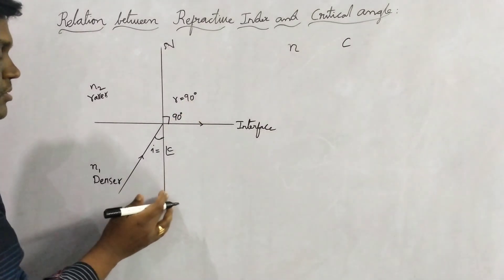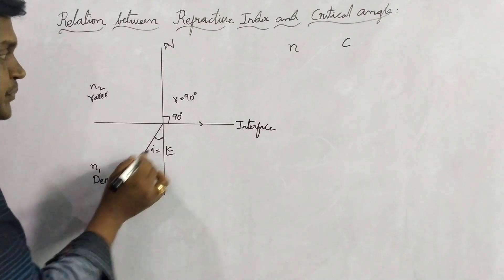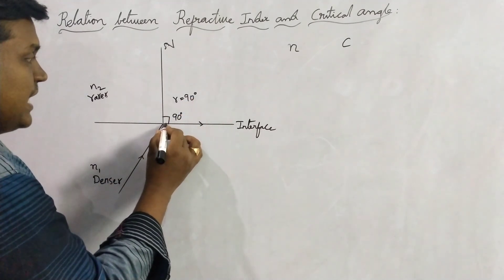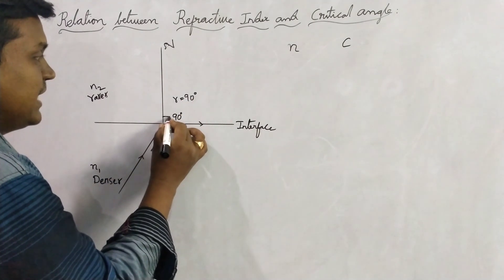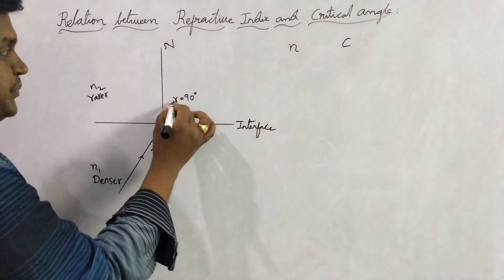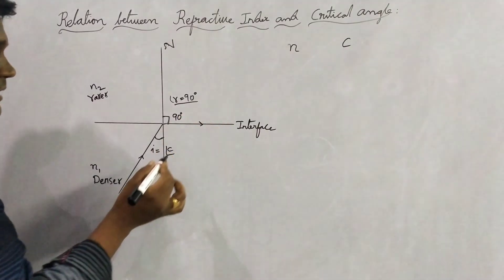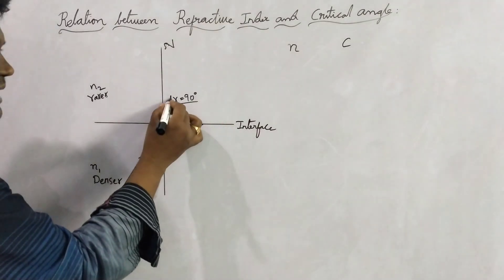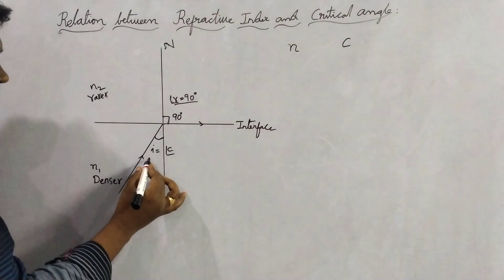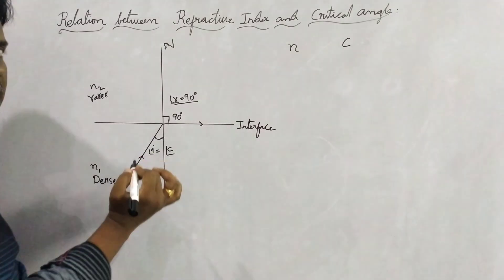The ray is travelling from optically denser medium to optically rarer medium, and in the rarer medium it is making an angle of 90 degrees to the normal. So angle R is equal to 90 degrees. Then whenever the angle of incidence i is equal to the critical angle.